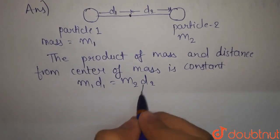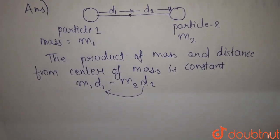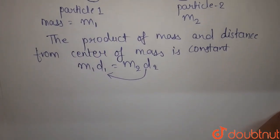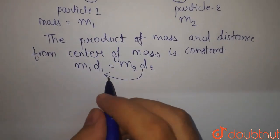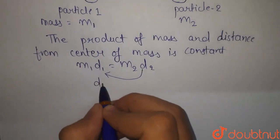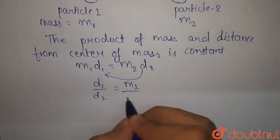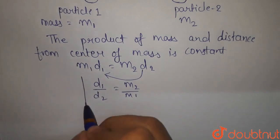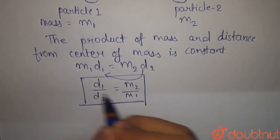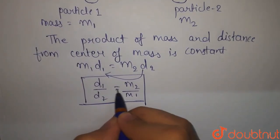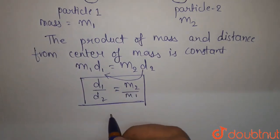If I take D2 to the other side, then what is the value of D1 by D2? M2 upon M1. So the answer, how is D1 by D2 determined? D1 by D2 equals M2 upon M1.